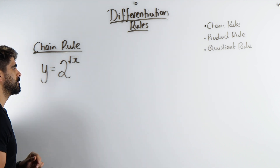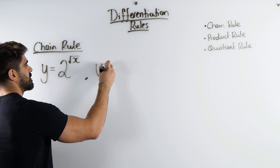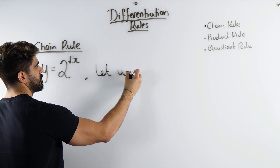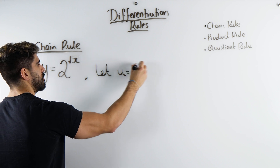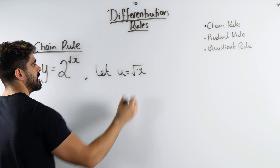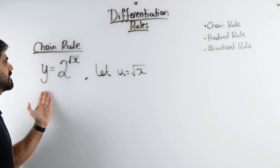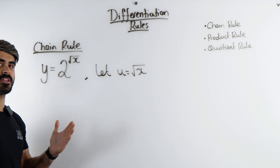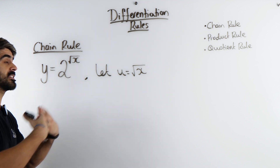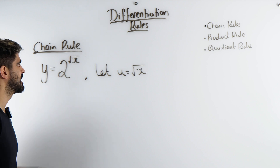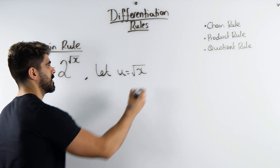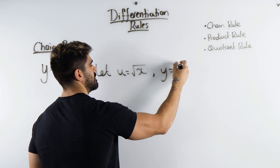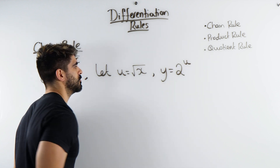What I'm going to do is let u equal that power of root x. Because what that does is it rewrites this as something which we should know how to differentiate, and that'll be 2 to the power of u. So we have y is 2 to the power of u.